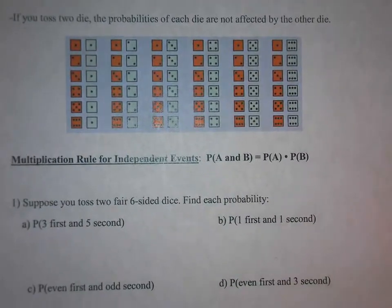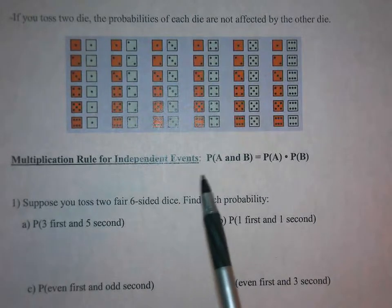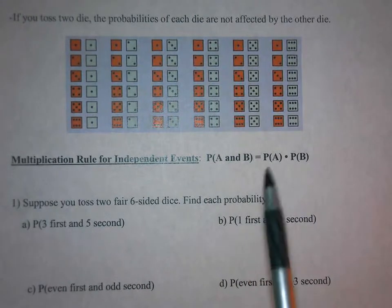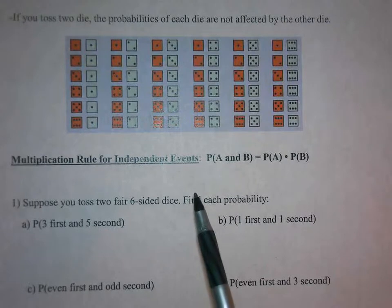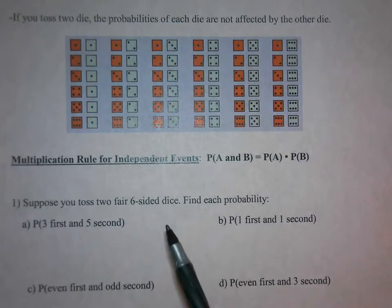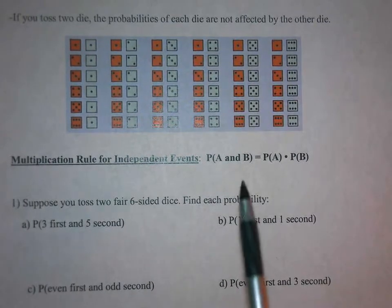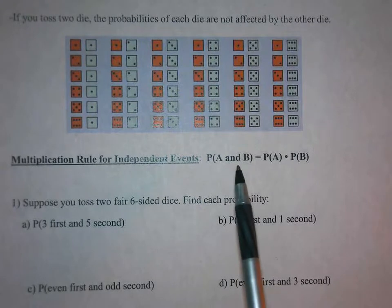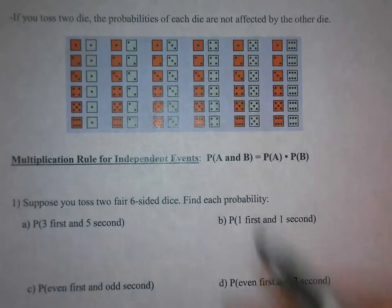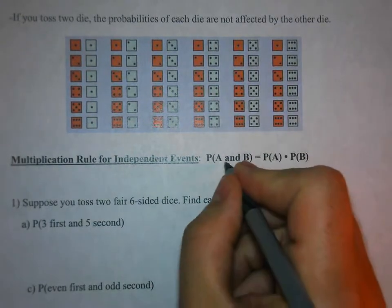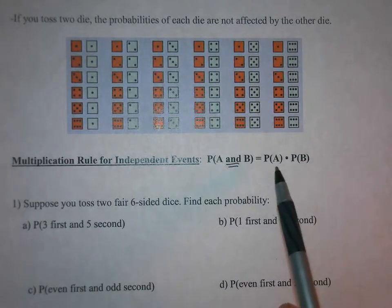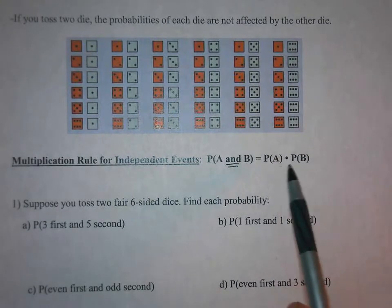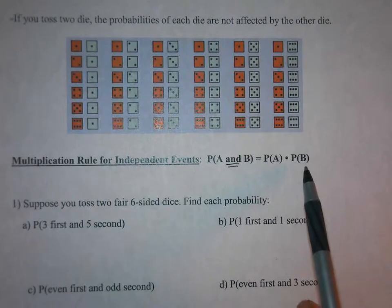We have a multiplication rule for independent events, and you have to pay attention to the wording when looking at probabilities. The probability of A and B — that word 'and' is actually very important. You're going to multiply the probability of A times the probability of B.